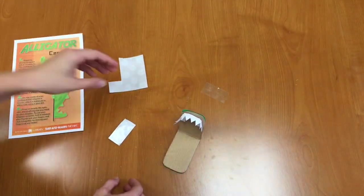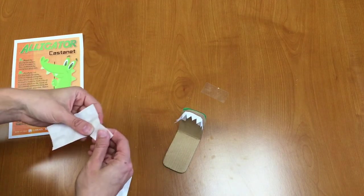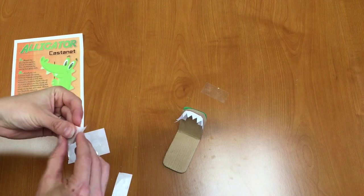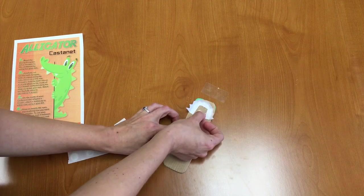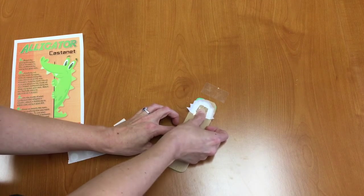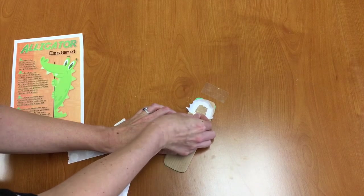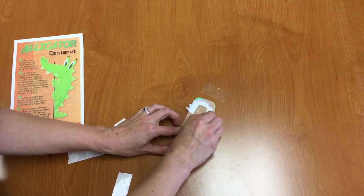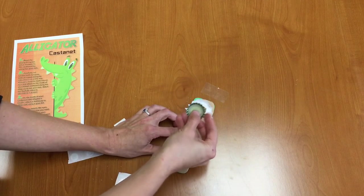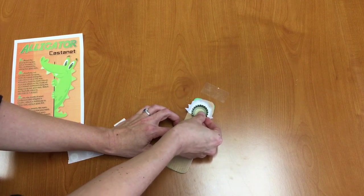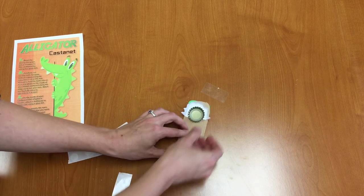Next step is to take another glue dot. And you're going to put that right in the middle of the alligator's teeth. Right in the middle of the U there. And we're going to take a bottle cap. Flip it over so the flat side is facing down. And stick it right in the middle there.